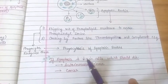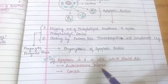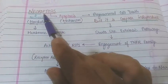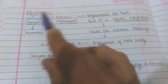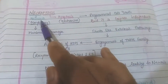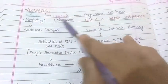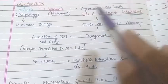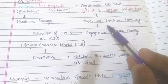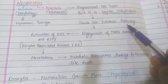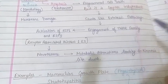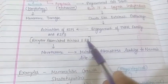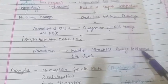If apoptosis is decreased in cells that should die, it leads to autoimmune disease or cancer. Necroptosis has the mechanism of apoptosis but the morphology of necrosis — it is also a programmed cell death but is caspase-independent. It starts like the extrinsic pathway with engagement of the TNFR family, activating RIP1 and RIP3 (receptor-interacting kinases 1 and 3), forming the necrosome, which causes metabolic alterations leading to necrosis-like cell death.